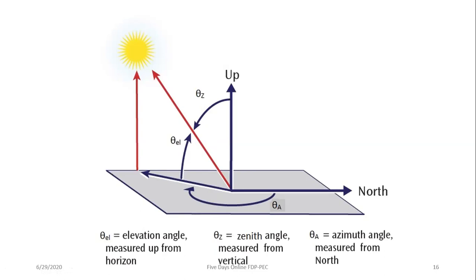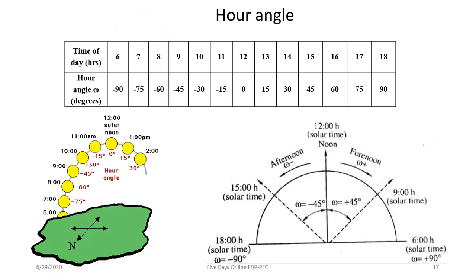In the morning the elevation angle is zero, and it increases toward noon but is not 90° except on specific days and only at the equator. The hour angle is based on Earth rotating 360° in 24 hours — that is 15° per hour — so 15 × 24 = 360°. At solar noon the hour angle is assumed to be zero; it is positive in the afternoon and negative in the morning.